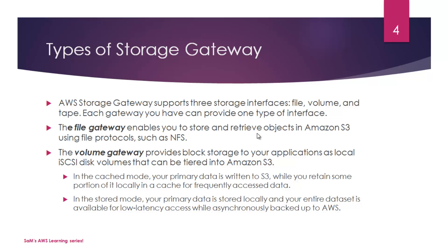The second type is Volume Gateway, which provides block storage to your applications as local iSCSI disk volumes that can be tiered into Amazon S3. Volume Gateway has two different modes: Cache mode and Stored mode. Unlike File Gateway which is used for flat file storage in S3, Volume Gateway is iSCSI-based storage used for block-based storage — think of it as a virtual hard disk.